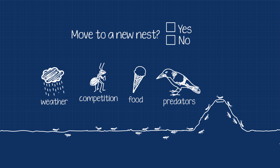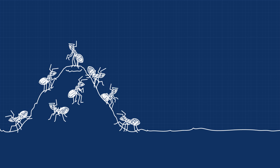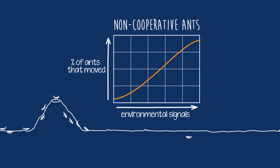If ants acted non-cooperatively, each ant would make decisions independently of the other ants in the colony. This means that some ants may elect to leave while others would remain.